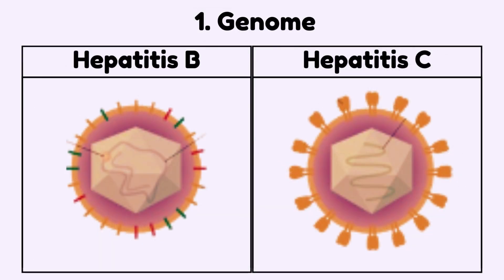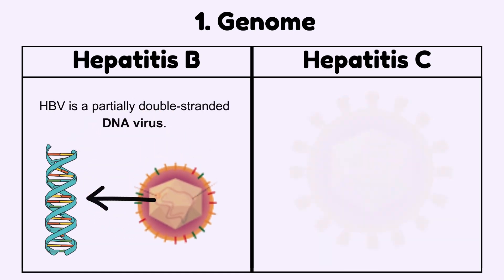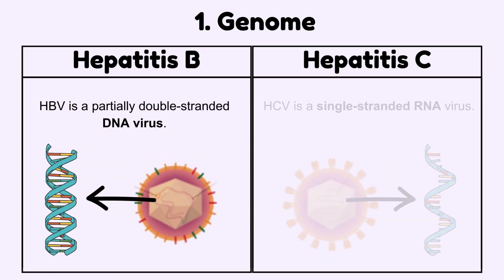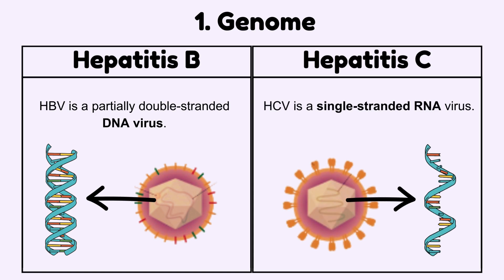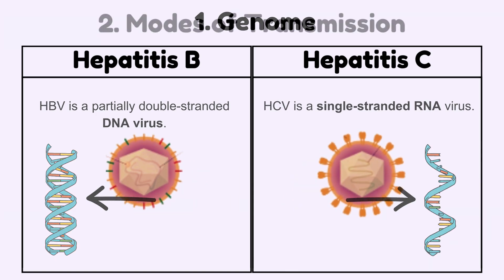Genome of viruses: Hepatitis B is a partially double-stranded DNA virus, while Hepatitis C is a single-stranded RNA virus.